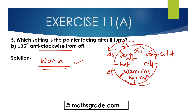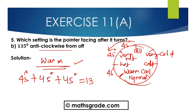Warm is at 135 degrees, because 45 plus 45 plus 45 degrees is 135 degrees. Off to very hot is 45 degrees, very hot to hot is 45 degrees, and hot to warm is 45 degrees. So this is warm. The pointer facing 135 degrees anti-clockwise from off is warm.